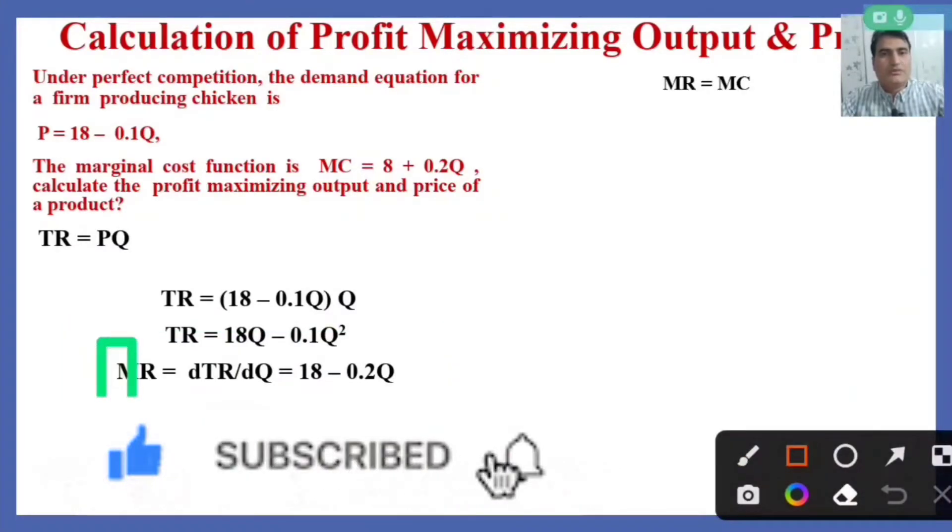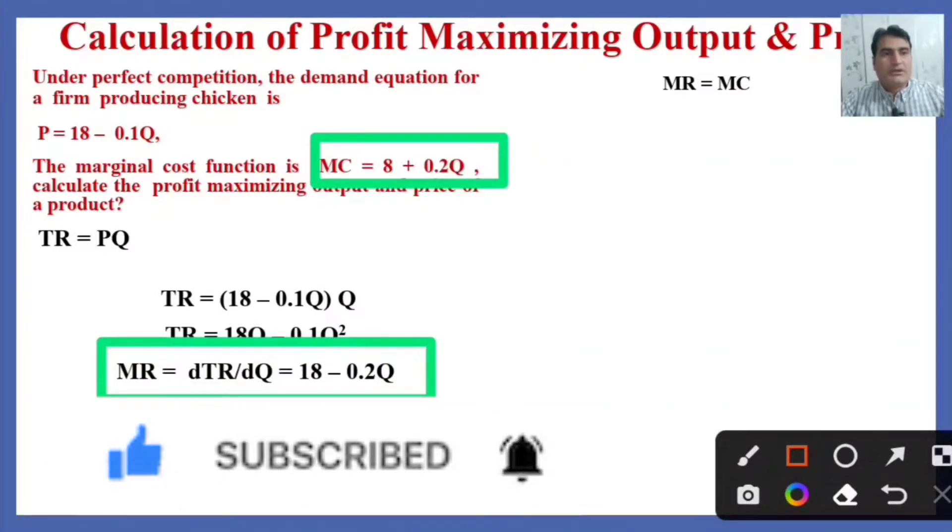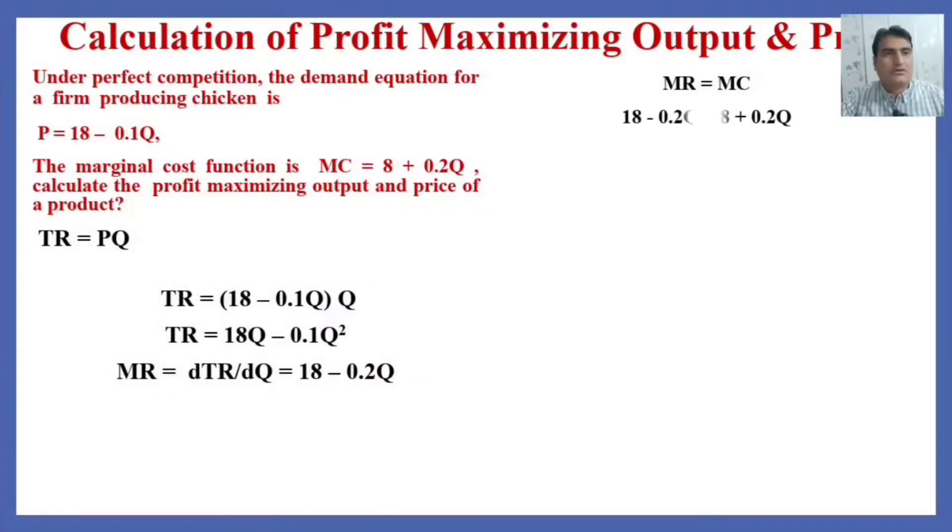We have both functions: the marginal revenue as well as the marginal cost. So setting the marginal revenue and marginal cost equal, we shall solve it. After solving, we can see that 10 = 0.4Q, so quantity is equal to 25. So the 25 level of output assures us the maximum profit under perfect competition.